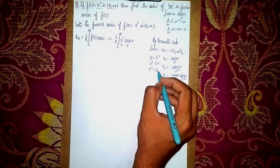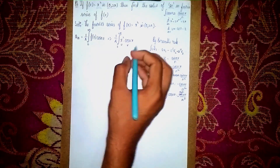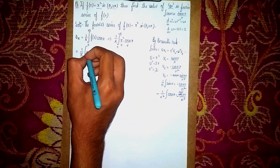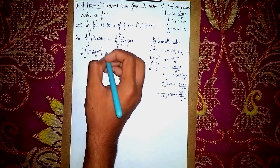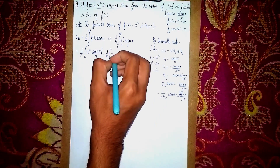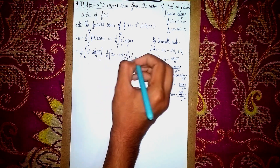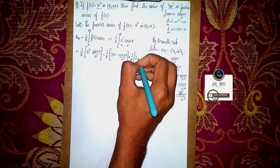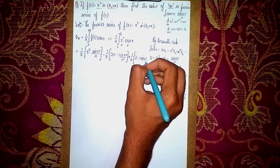Now substituting values: aₙ = (1/π)[x²·sin(nx)/n] − (1/π)[2x·(−cos(nx)/n²)] + (1/π)[2·(sin(nx)/n³)], all evaluated from 0 to 2π.